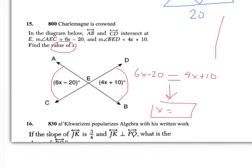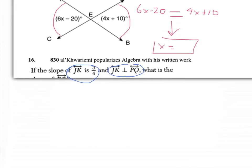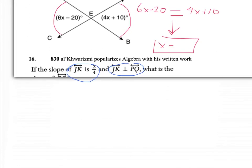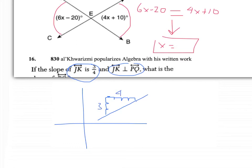Question 16 says there are two segments that are perpendicular, and the slope of JK is 3/4. They want to know the slope of PQ. If JK has a slope of 3/4, that means for every 3 up, you slide over 4. If you want perpendicular to it, it has to be going in the opposite direction, so right off the bat the slope has to be negative. You should know about negative reciprocals, so the answer is negative something over something.